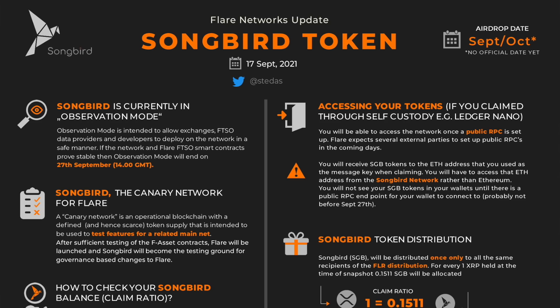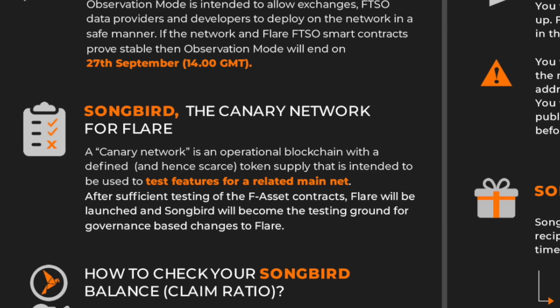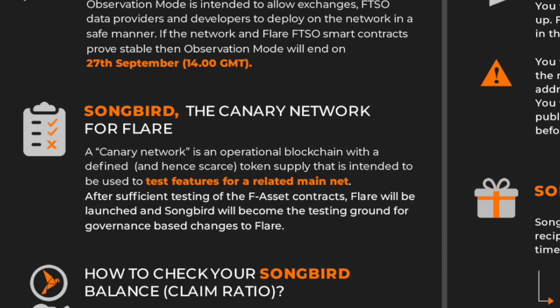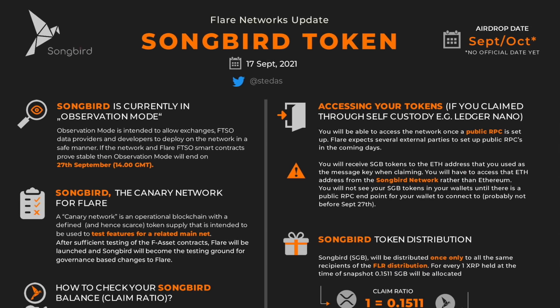What is Songbird? It's the canary network for the Flare network. A canary network is an operational blockchain with a defined and hence scarce token supply, intended to test features for a related mainnet — the Flare network. After sufficient testing of the F-assets contracts, Flare will be launched and Songbird will become the testing ground for governance-based changes on Flare. The Songbird network holds real value as its own layer-one solution, and holders of the Spark token will be able to vote to implement various changes, which will first be tested on Songbird before being brought over to Flare.